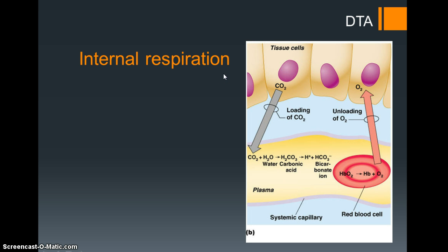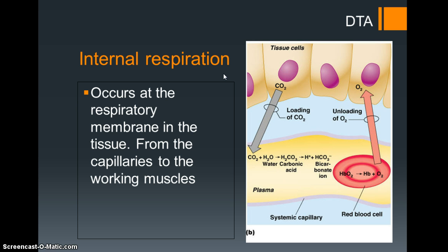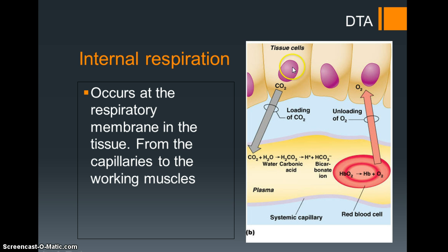Internal respiration takes place at the respiratory membrane in the tissue - this could be any tissue: your kidneys, your gastrocnemius, thigh muscle, anywhere where oxygen is needed within the body. From the capillaries to the working muscles we get a diffusion of O2 across into the working muscles, and at the same time a diffusion of CO2 from the working muscles into the capillaries. That's the site of internal respiration.